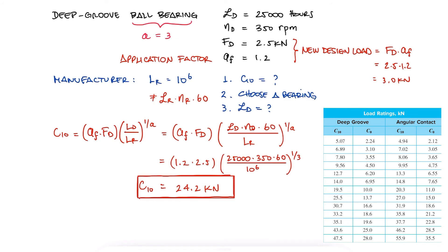From the available options in the catalogue, we see that the closest yet higher value than 24.2 is 25.5 kN.